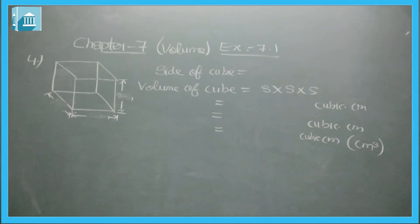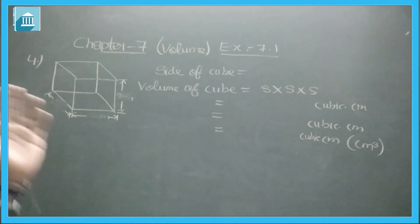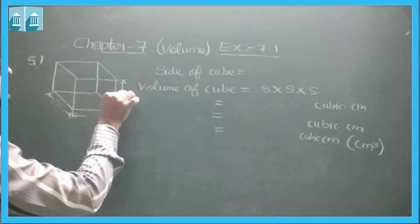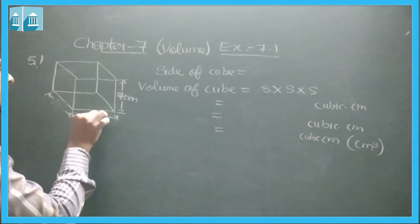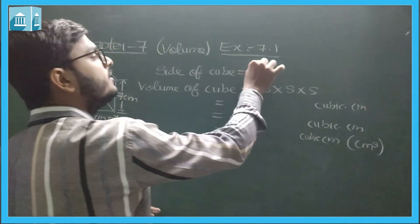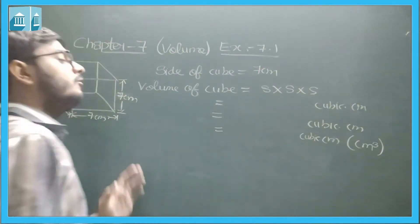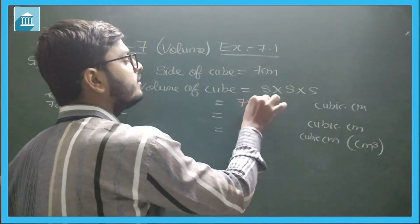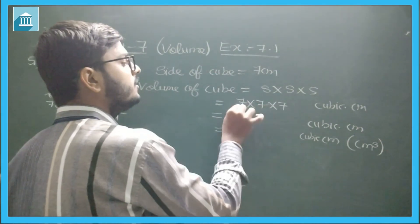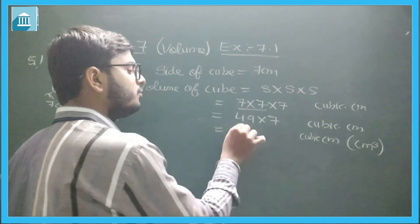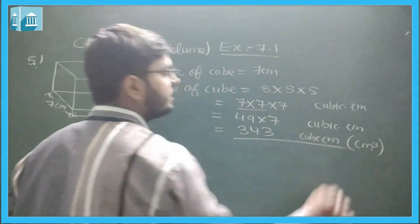In question number 5, the only change is the side length: it is 7 cm instead of 11 cm. Volume of cube = 7 × 7 × 7 = 49 × 7 = 343 cm³.